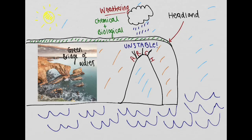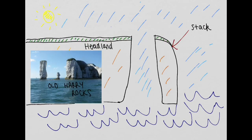An arch is very unstable. Vertical joints in the rock face are exposed to large destructive waves, whilst the top of the arch is exposed to chemical and biological weathering. Over time the arch can no longer withstand its own weight and therefore collapses into the sea to leave a single pillar of rock called a stack.